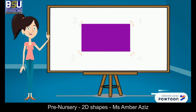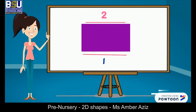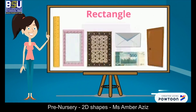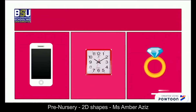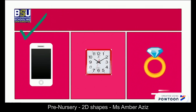Very good! A rectangle has two long and two short sides. Now I will show you some objects that are rectangle in shape. Get ready to spot the rectangle for me. Yes, you are right — this mobile phone is rectangle in shape.